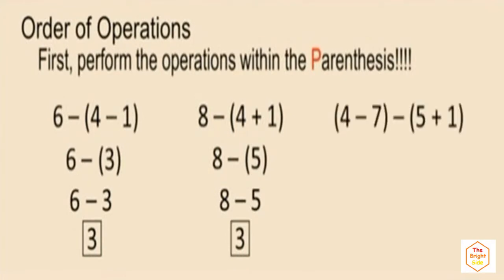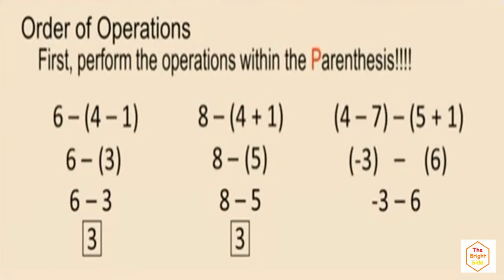Notice we have two sets of parentheses, so we have to simplify the expressions within both. Four subtract seven is negative three; five plus one is six. We don't require parentheses around the negative three, and since we're subtracting a positive six, we don't require those parentheses either. It becomes negative three subtract six, which is negative nine.